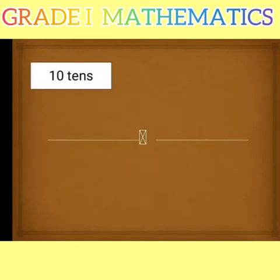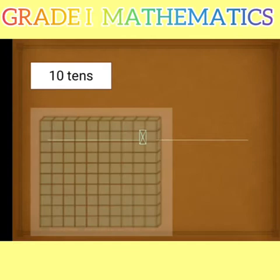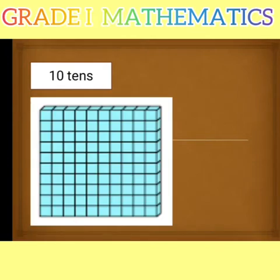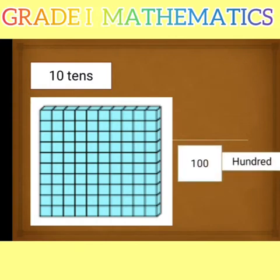Next is 10 tens. Here you can see 10 tens are together. So it's 100. Spelling is H-U-N-D-R-E-D, 100.